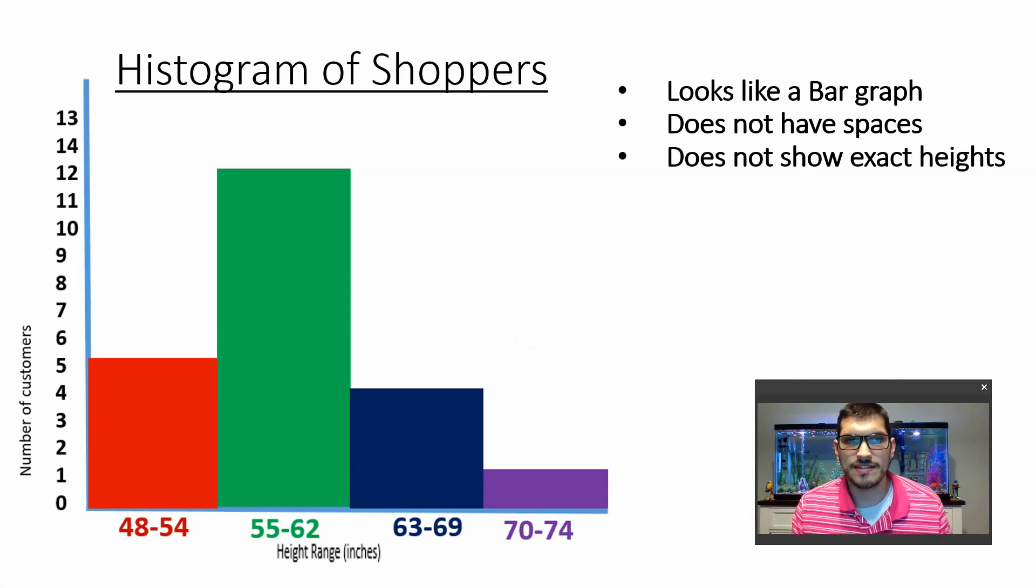So just kind of looking at the general information of our histograms. Yes, it does look like a bar graph, but it's not. You'll notice that there are no spaces in between the bars. That's a big indicator that says, hey, this is a histogram. Also, we don't know exactly how tall they are. So if this histogram is the only information they give us, we can only go off of, well, we know that there's 12 people between 55 and 62. We don't know exactly how tall they are. So it does have some limitations on the information given. But again, our points of graphs are to give us a quick visualization of our information, of our data.